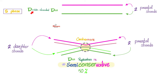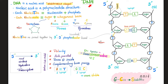We start with two parent strands and use each one as a template to synthesize a new strand. At the end, the two parent strands remain, but we've added two new daughter strands. That's why DNA replication is semi-conservative: we conserved 50% from the past and added 50% new. So DNA can be called a semi-conservative replicator.